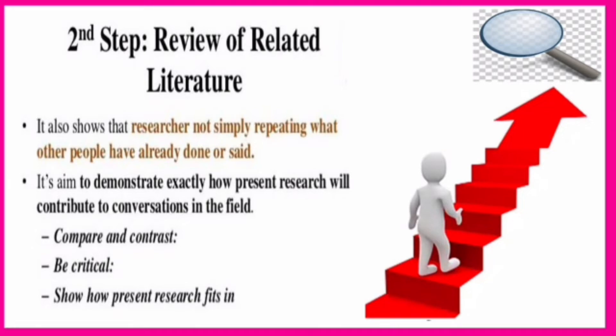The second step of a research proposal is the review of related literature. This step shows the path to the researcher and also shows that the researcher is not simply repeating what other people have already done or said. Its aim is to demonstrate exactly how the present research will contribute to the conversation in the field. Its main aim is sharing of thoughts and ideas with other researchers. This step helps the researcher to know about the five C's: cite, compare, contrast, critique, and connect.